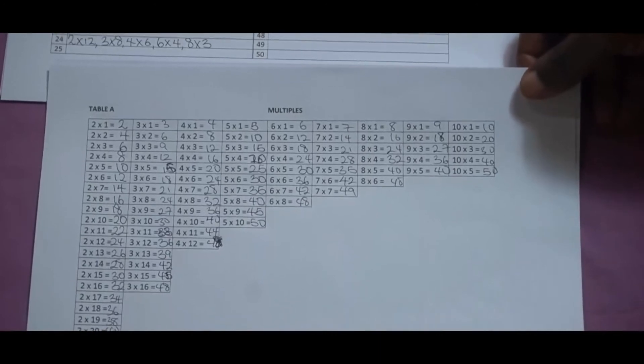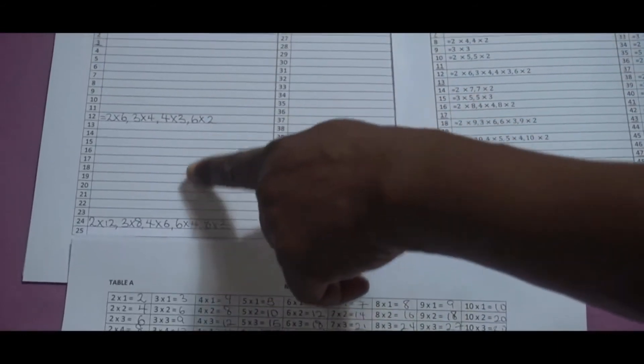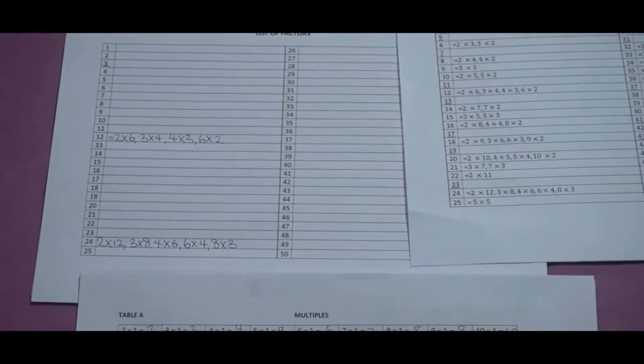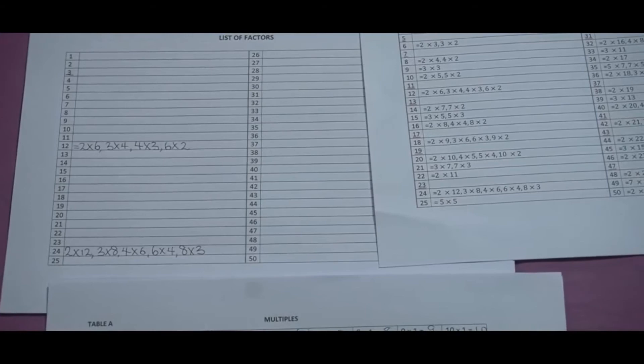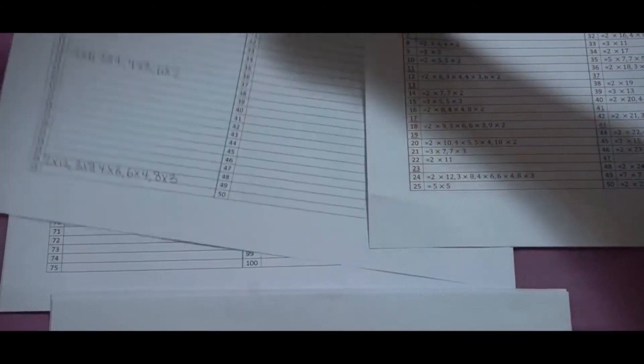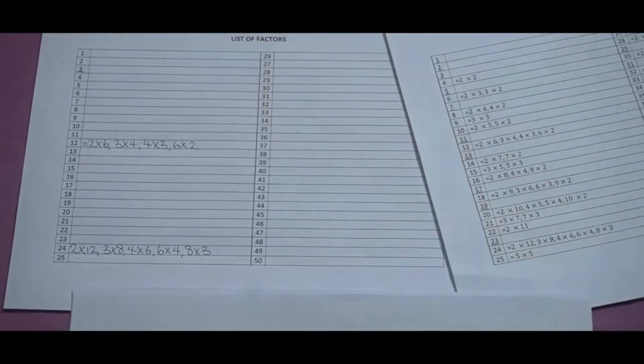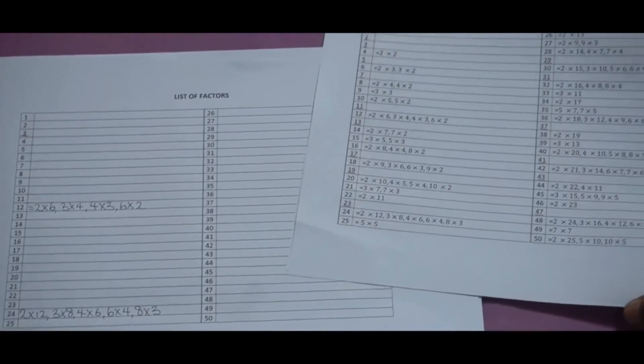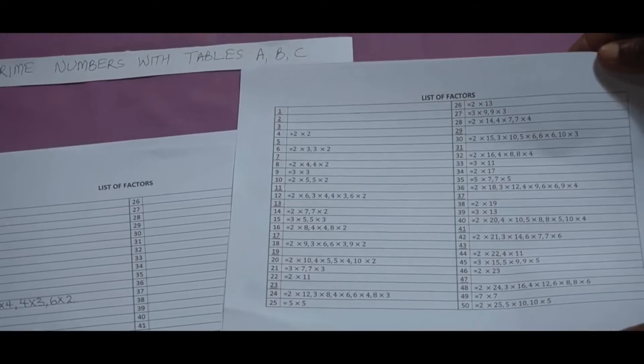Okay, so when you finish filling your table here, finding the different multiples of numbers from 2 to 100, okay, once you finish filling these forms, then use this. This is the control of error. Use this to check your answer to make sure that you filled your table correctly. Yes.